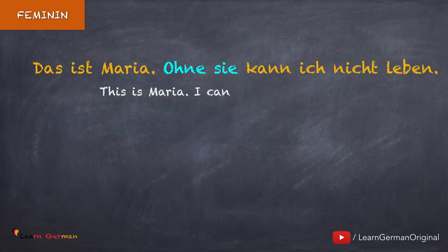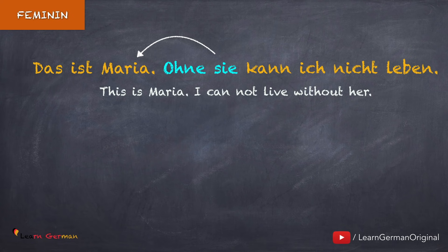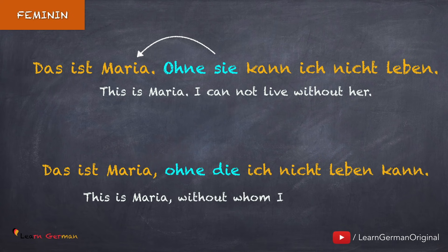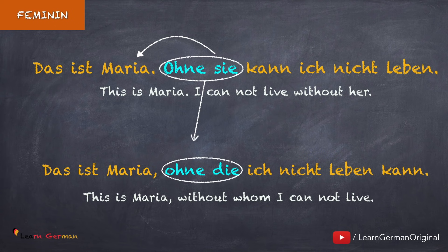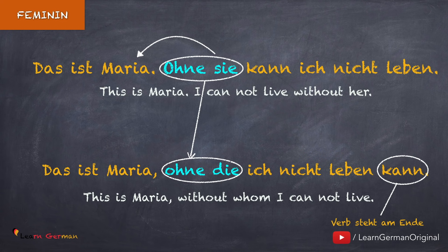Genauso ist es für andere Akkusativpräpositionen. Hier ist noch ein Beispiel: Das ist Maria — ohne sie kann ich nicht leben. Ohne ist hier die Akkusativpräposition. Im Relativsatz sagen wir: Das ist Maria, ohne die ich nicht leben kann. Die Präposition steht am Anfang vom Relativsatz, statt sie benutzen wir die als Relativpronomen, und das Verb steht am Ende.